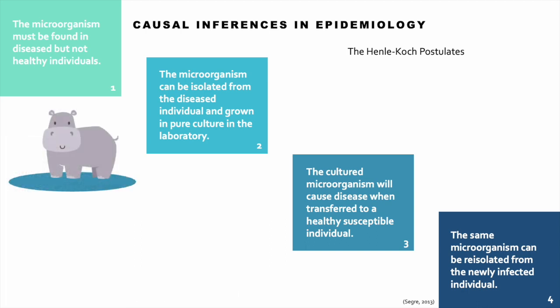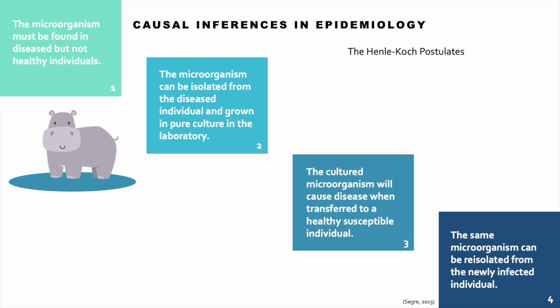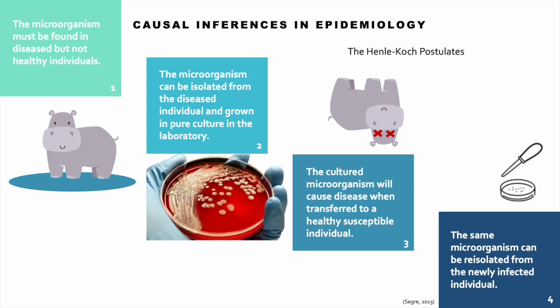He worked extensively with anthrax, which works well with his postulates. Using anthrax in hippos as an example, we would be able to find Bacillus anthracis in diseased hippos but not in healthy hippos. You can collect a sample of the bacteria from a diseased hippo and grow it in the lab. If you inoculate a healthy animal with Bacillus anthracis, it will develop anthrax, and you can then re-isolate Bacillus anthracis from the sick hippo and grow it again in the lab. So anthrax satisfies all four of Koch's postulates.